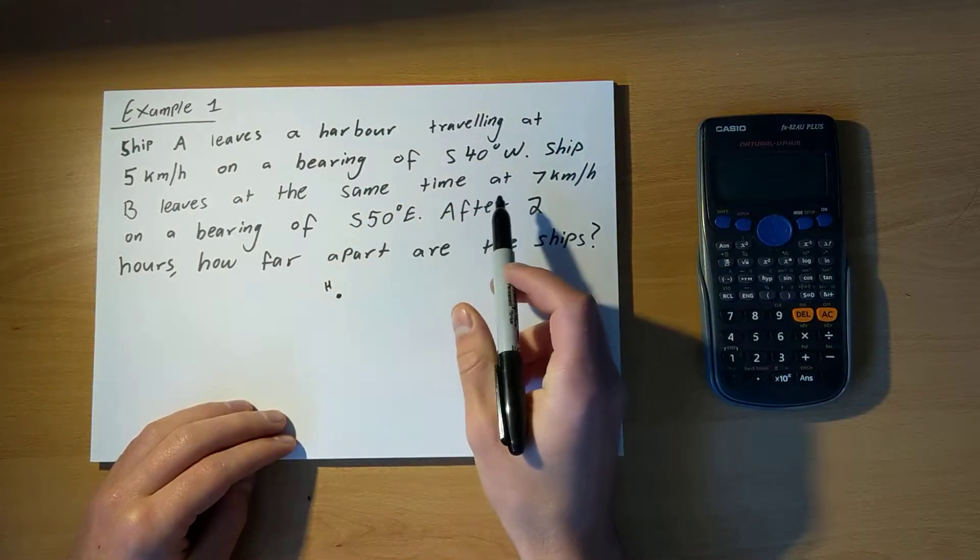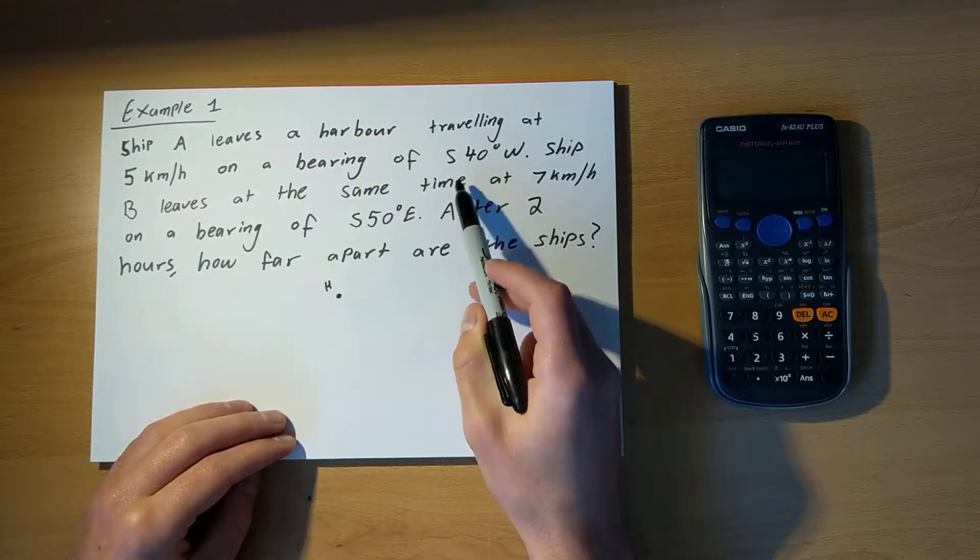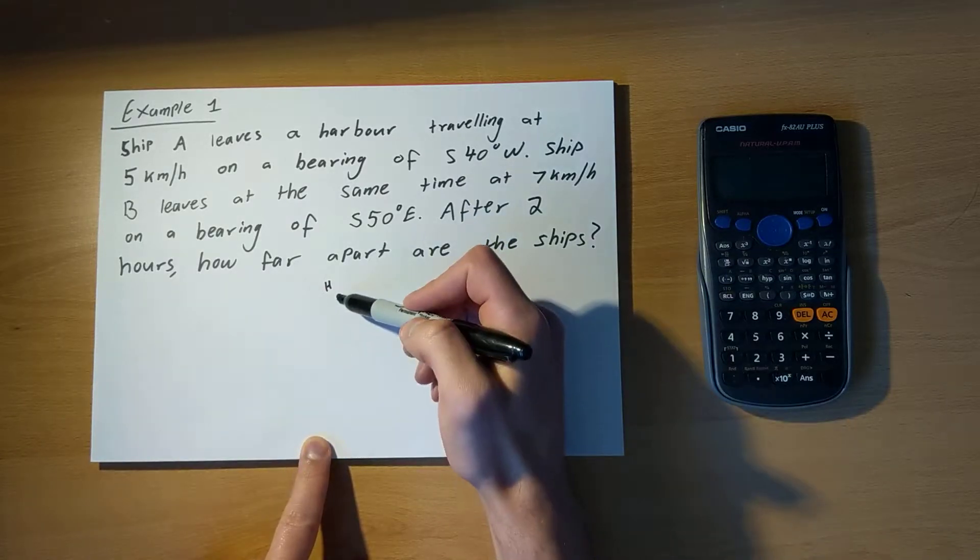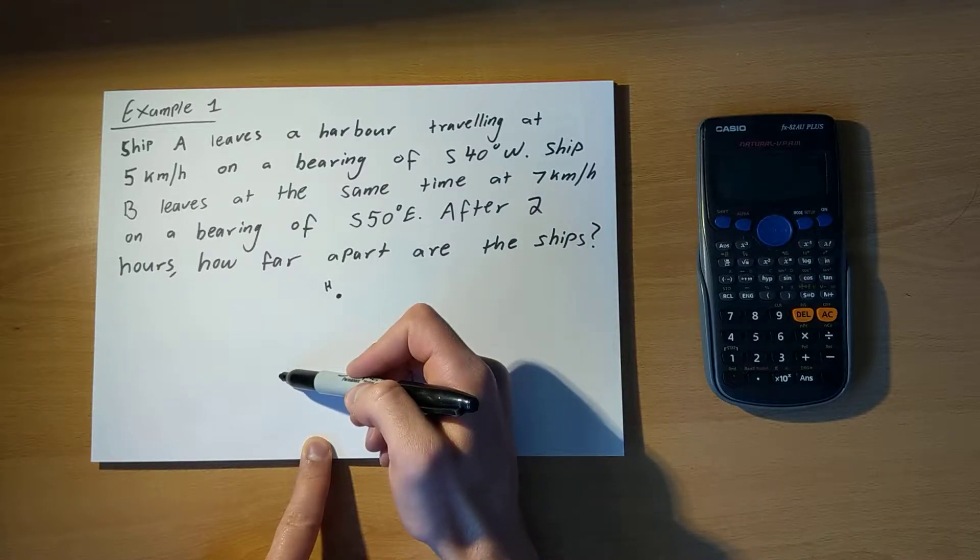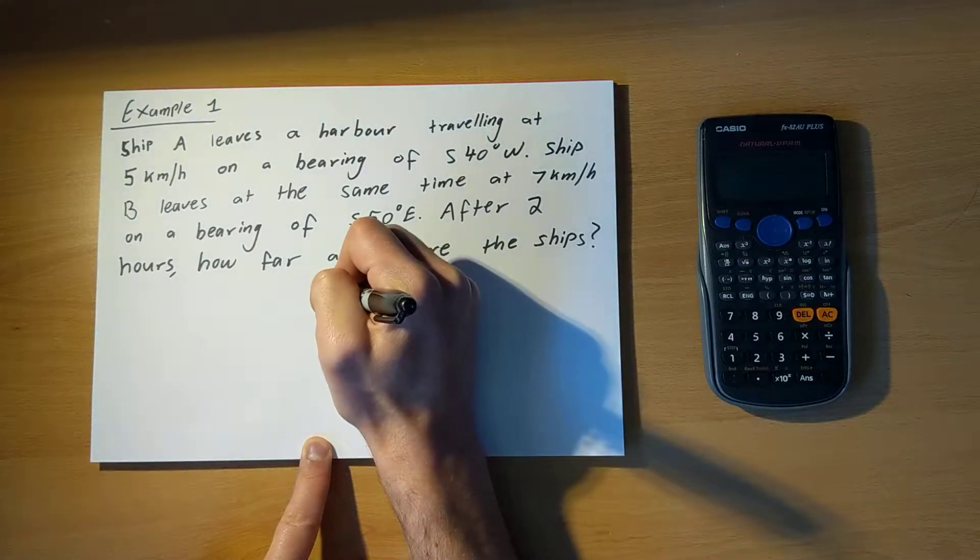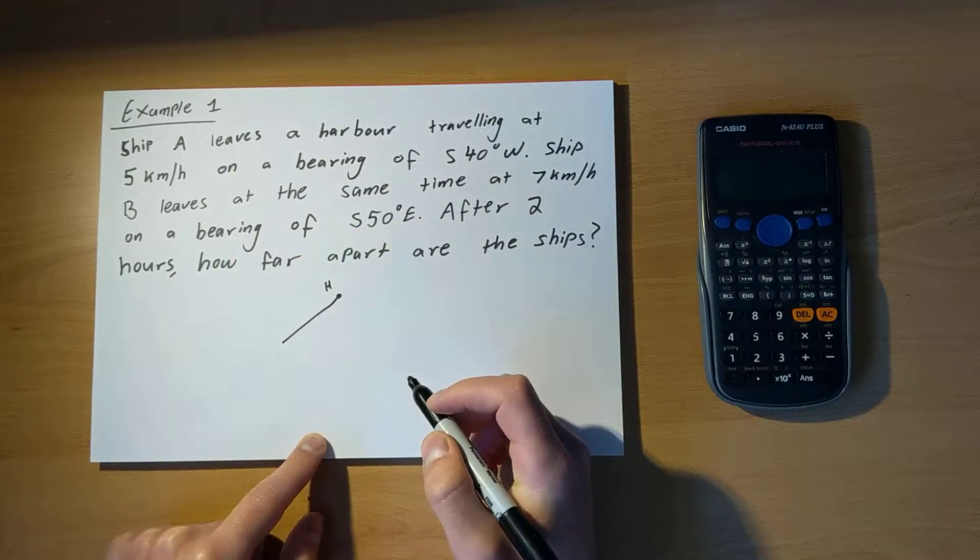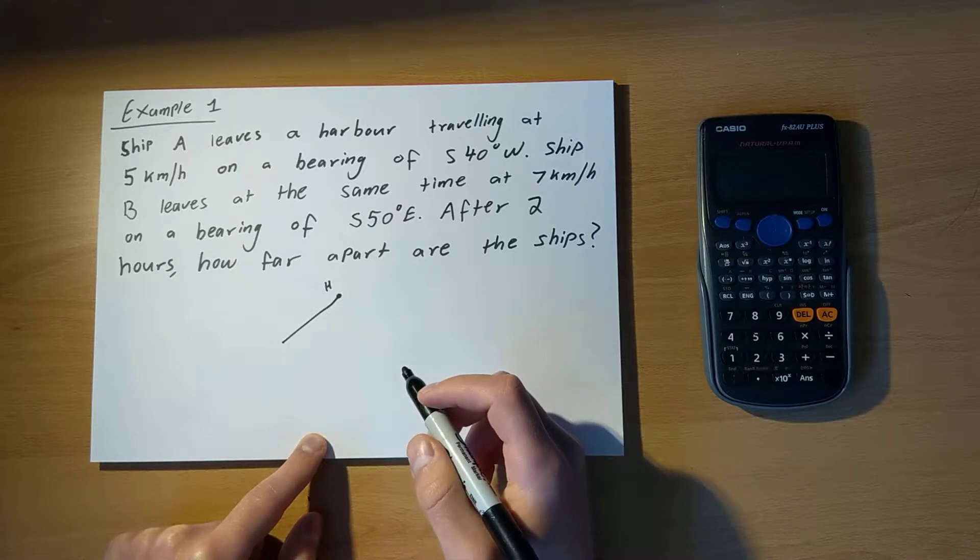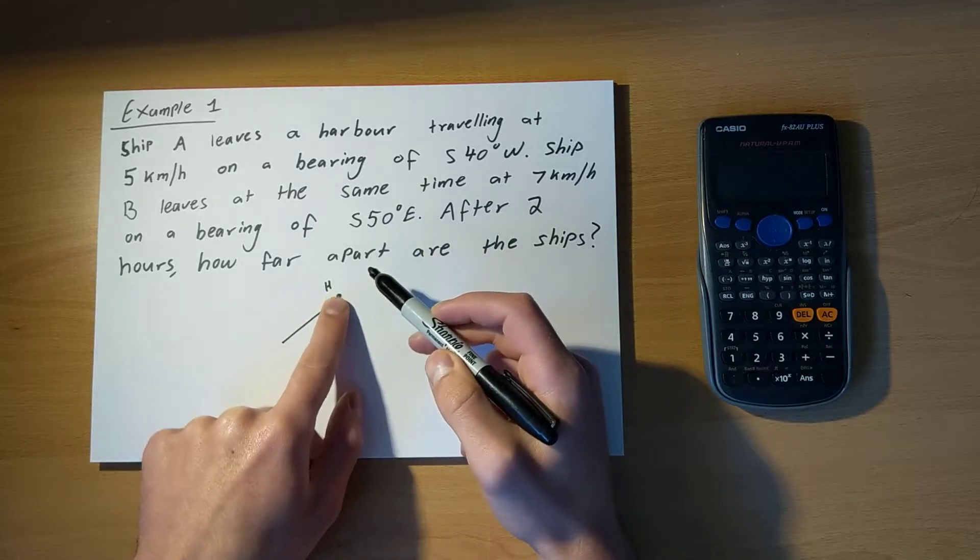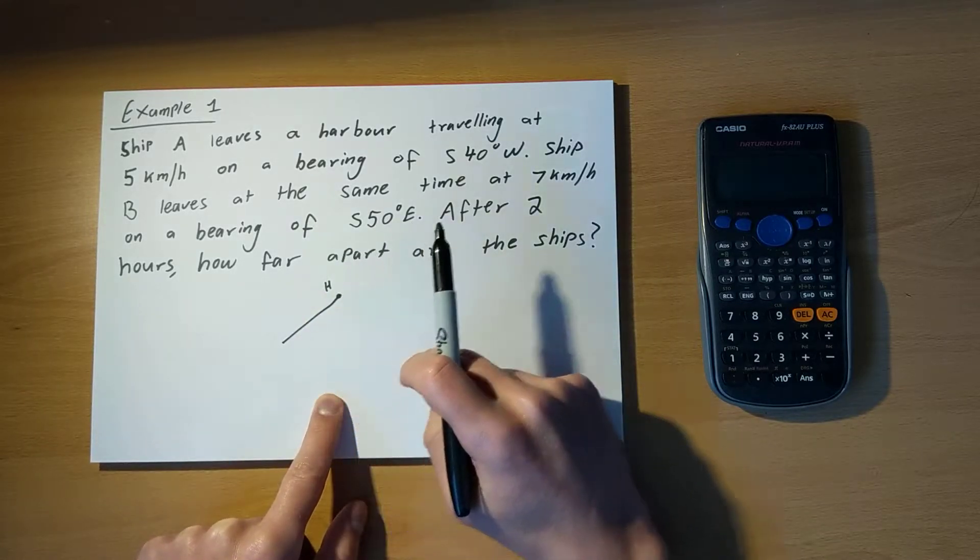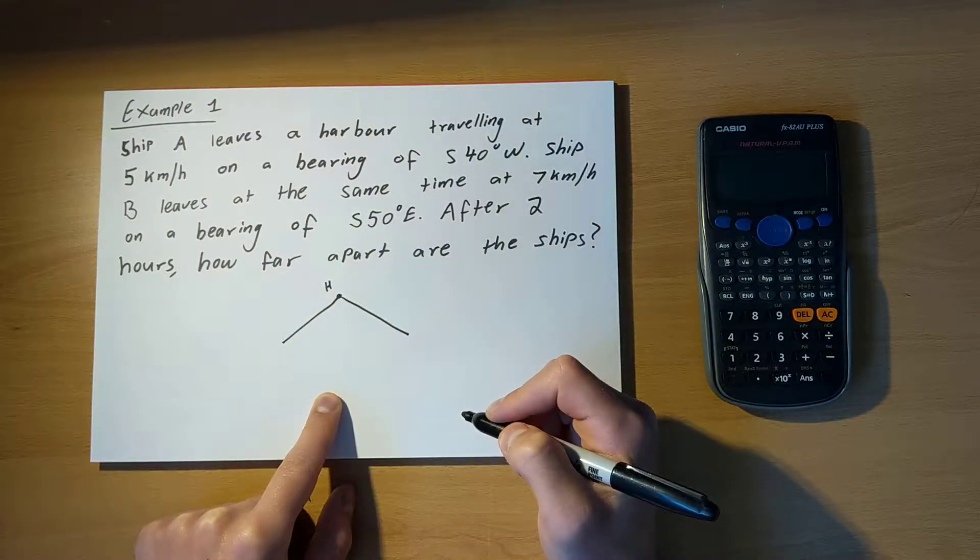Then ship A is travelling at 5km an hour on a bearing of south 40 degrees west. So what does south 40 degrees west mean? It means I start south and then I swing 40 degrees west and this is the direction that ship A is travelling in. Ship B is travelling in a direction of south 50 degrees east. So I start south and I swing 50 degrees east and that's the direction that ship B is travelling in.